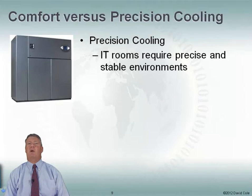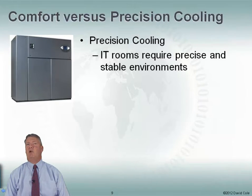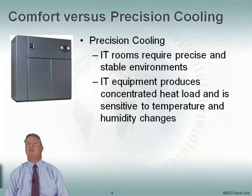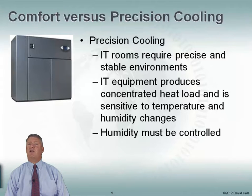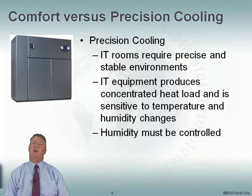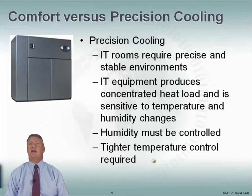Precision cooling — IT rooms require a precise, stable environment. It's important that we don't have big temperature swings and humidity swings when we're looking at servers, routers, and other IT equipment. IT equipment also produces very concentrated heat loads that are very sensitive to temperature and humidity changes. We have to control humidity. We don't think about humidity control very much when we're looking at comfort cooling, but in a data center the humidity must be controlled — we need tighter controls over both humidity and temperature.